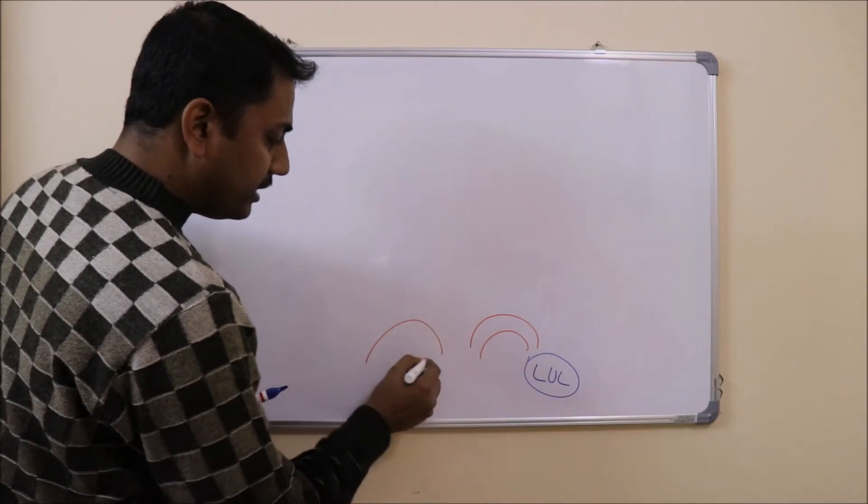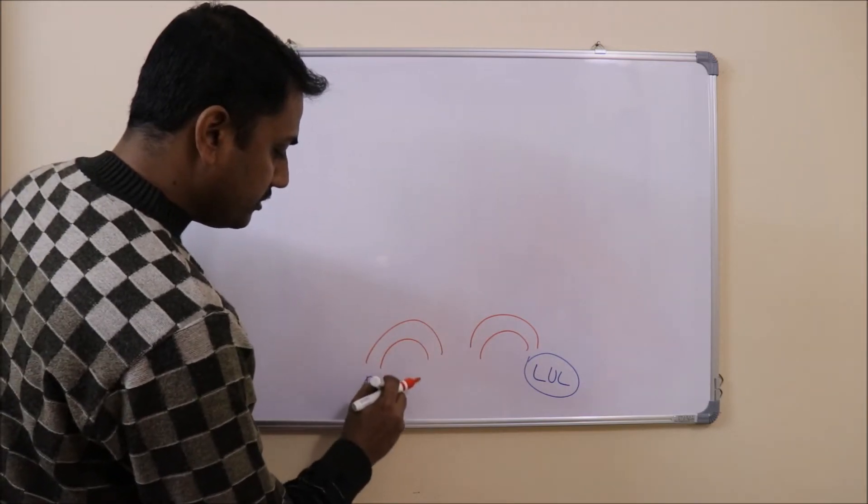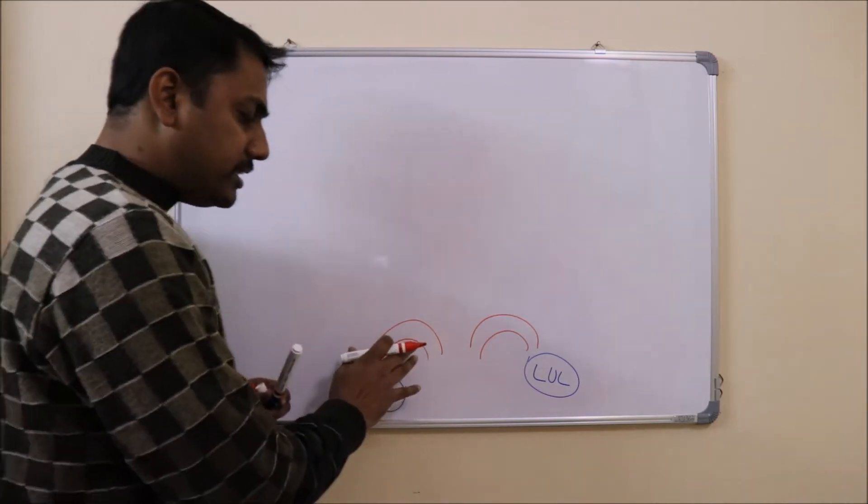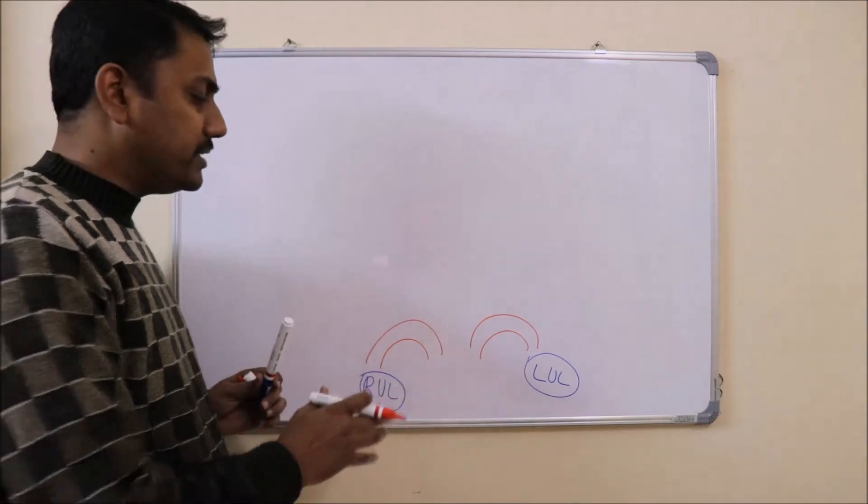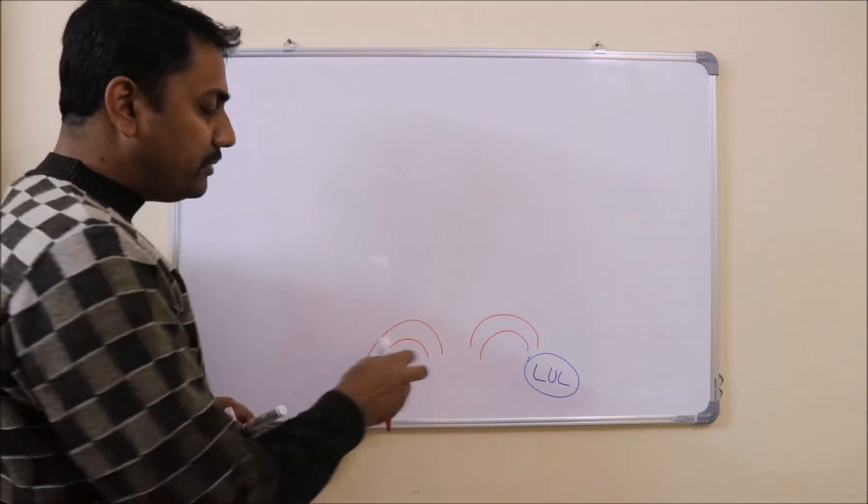And this is the right subclavian artery which will supply the right upper limb. We all know that the subclavian artery has been divided into three parts based on a muscle which is known as scalenus anterior muscle.